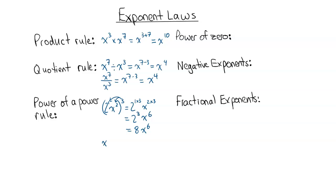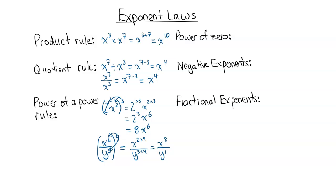A second example of the power of a power rule: X squared over Y to the power of three, all to the power of four. That would be equal to X to the power of two times four divided by Y to the power of three times four. So we multiply the four times the two, and the four times the three on the bottom, and we get X to the power of eight over Y to the power of 12. We can't simplify that any further.